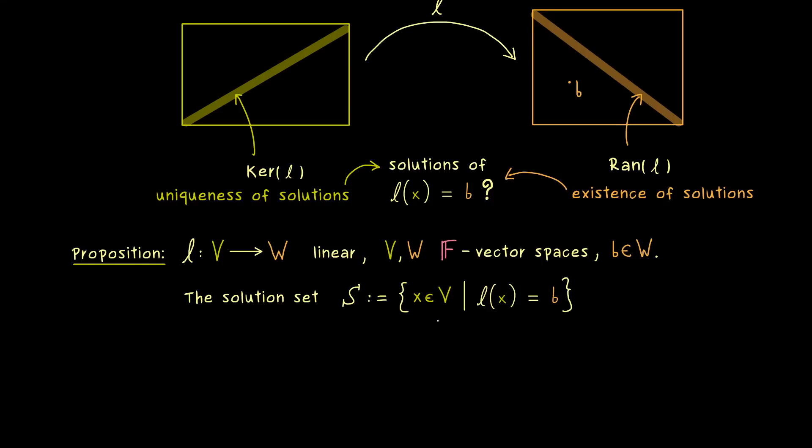Either it's empty or it's an affine subspace. The first case we obviously have if b is not in the range of l. In the second case, we know that there is at least one solution and we call it x_0. Now we get all the solutions by simply adding the kernel of l to x_0. So you see, this is exactly the same result as we had it in the matrix case.